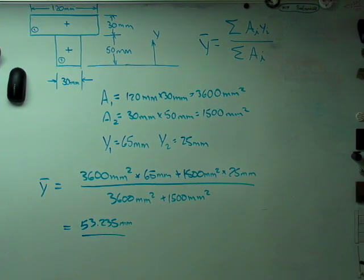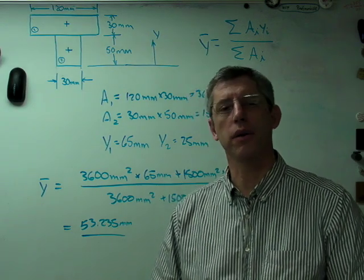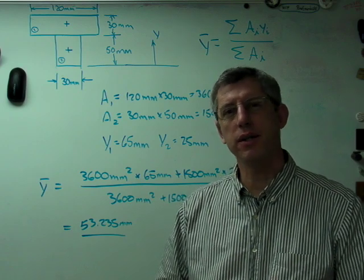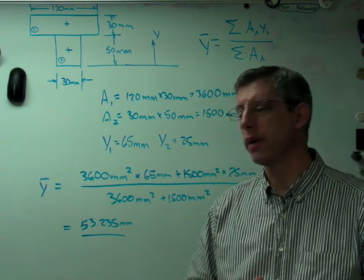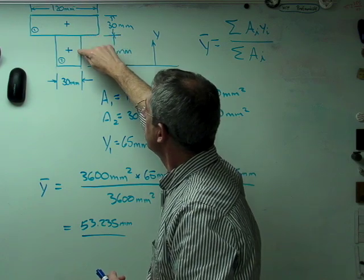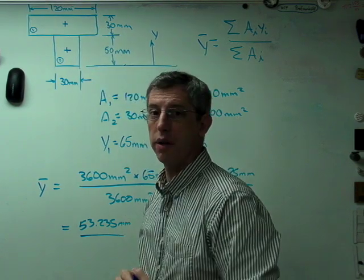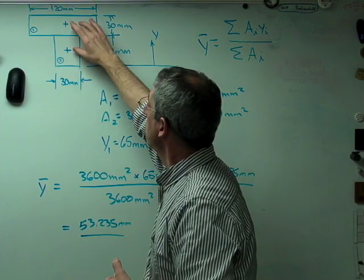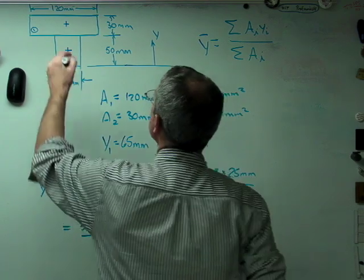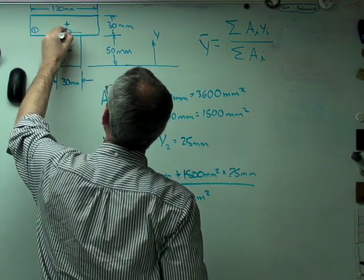Now let's take a second and do a quick sniff test. Could this be the right answer? Whenever you get a number you've calculated, you ought to stand back and ask, could this be the right answer? Well, it makes sense that the centroid of the entire shape is somewhere between the centroid of the lower box and the centroid of the upper box. So it has to be somewhere between 25 and 65. We've just calculated the centroid to be right about there.